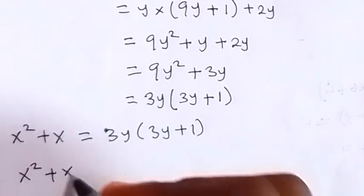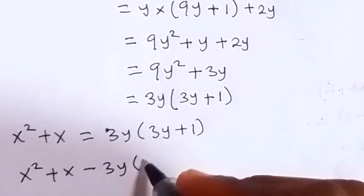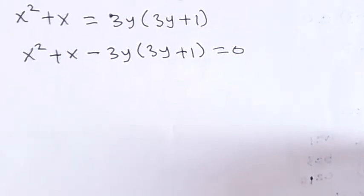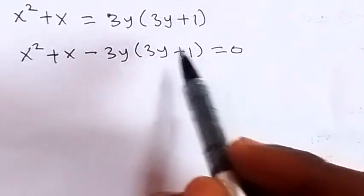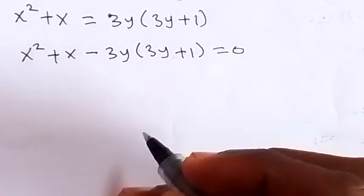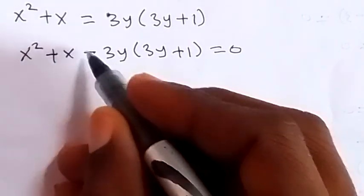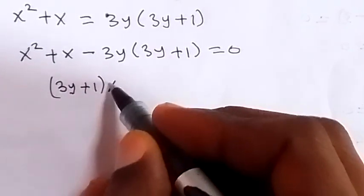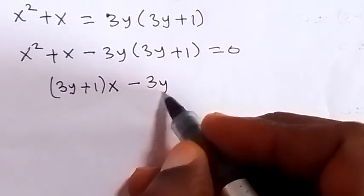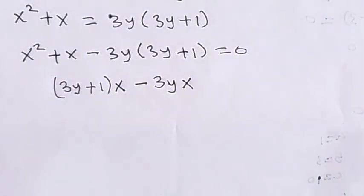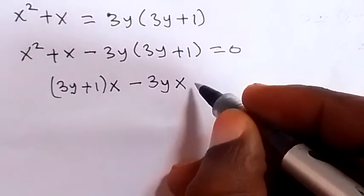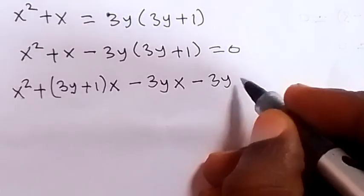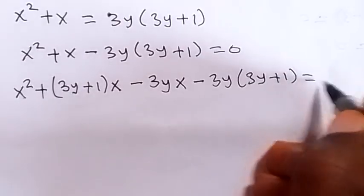We have x squared plus x minus 3y times bracket 3y plus 1, which equals zero. This is like a quadratic equation in terms of x, where 3 times bracket 3y plus 1 is a constant. We can factorize: x can be split as 3y plus 1 times x minus 3y times x, giving us x squared plus that term minus 3y times bracket 3y plus 1 equals zero.